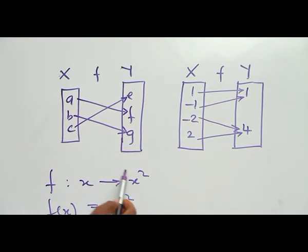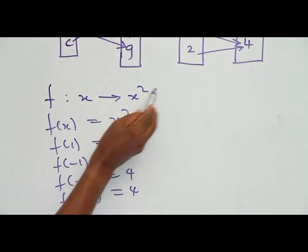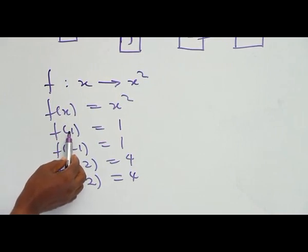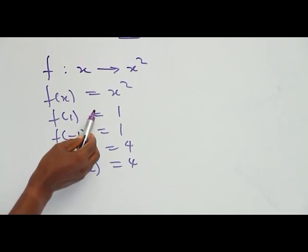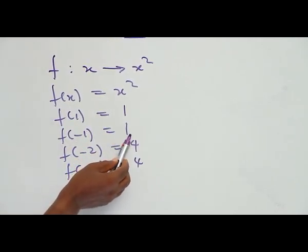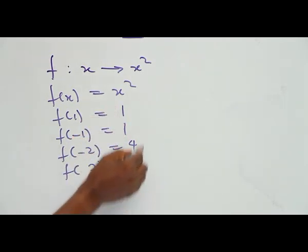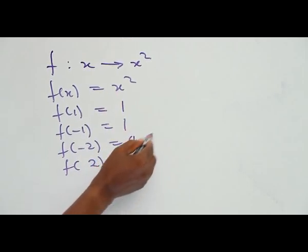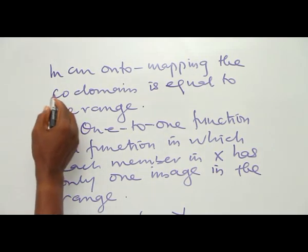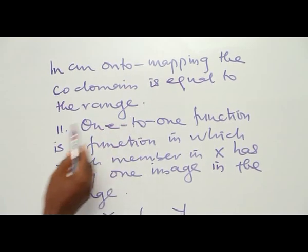This can be illustrated with a problem: if S is a function such that F(S) = S². Then F(1) = 1, F(−1) = 1, F(−2) = 4, and F(2) = 4. So the range is {1, 4}. In an onto mapping, the co-domain equals the range, as we have said.